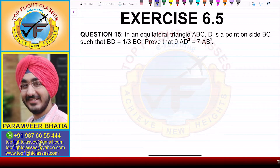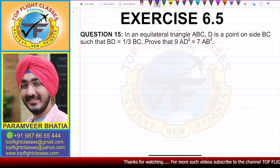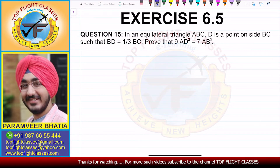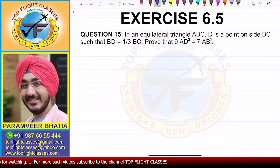In this video, we are going to solve question number 15 of exercise 6.5. The question says: in an equilateral triangle ABC, D is a point on the side BC such that BD is equal to one third of BC. Prove that 9AD squared is equal to 7AB squared.